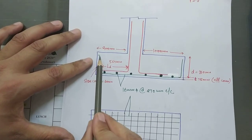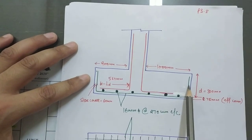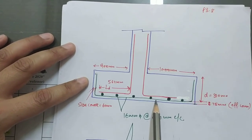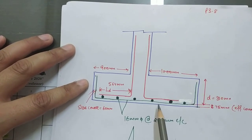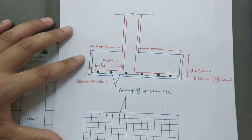The sketch shows the plan area of the footing with steel provided in both directions: 16 mm diameter bars at 270 mm center to center. The green lines in the diagram represent the reinforcement steel for the footing.